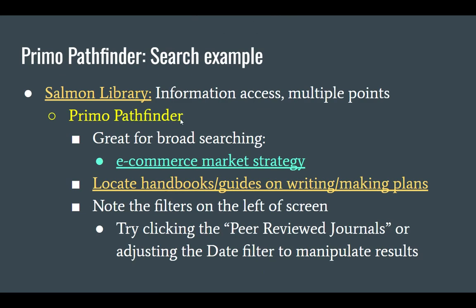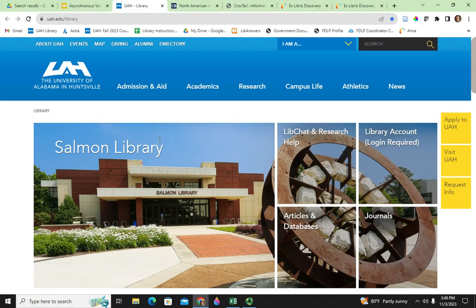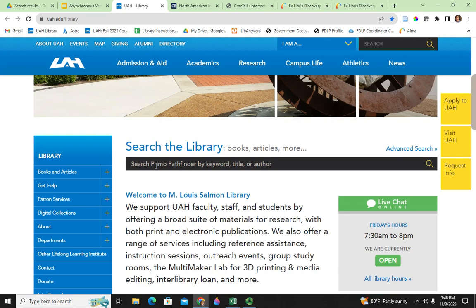Just a quick refresher on the library: the UAH library website is at uah.edu/library — this is where I would start my research process. On the library website, you'll find a big black search bar called 'Search the Library.' It's our Primo Pathfinder tool and it's great for broad searching — things like finding business writing books on how to write business plans, or doing work to find materials on marketing strategies like ecommerce or social media marketing. I'm going out to the website now and doing an ecommerce market strategy search.